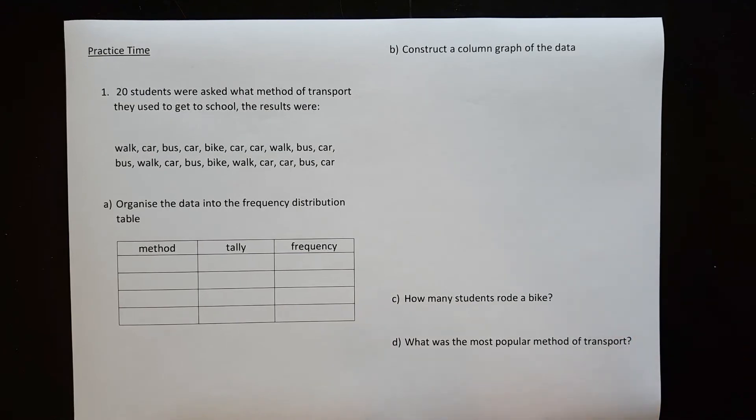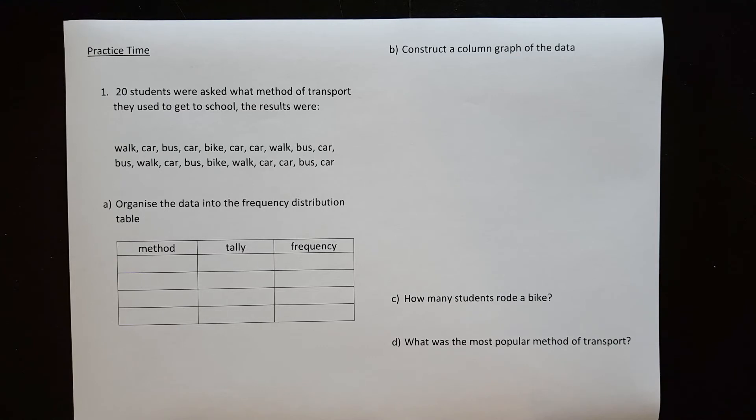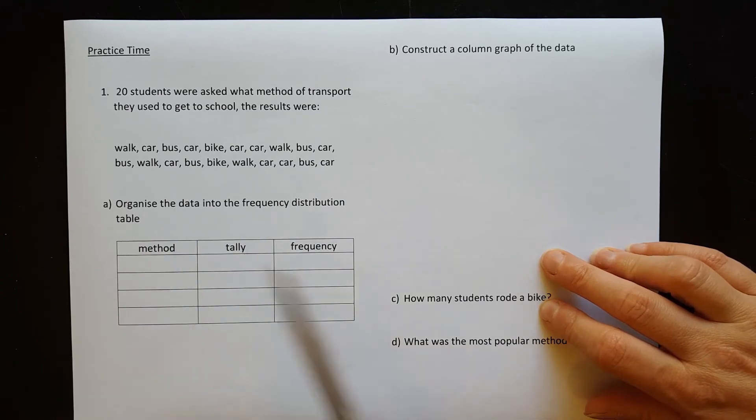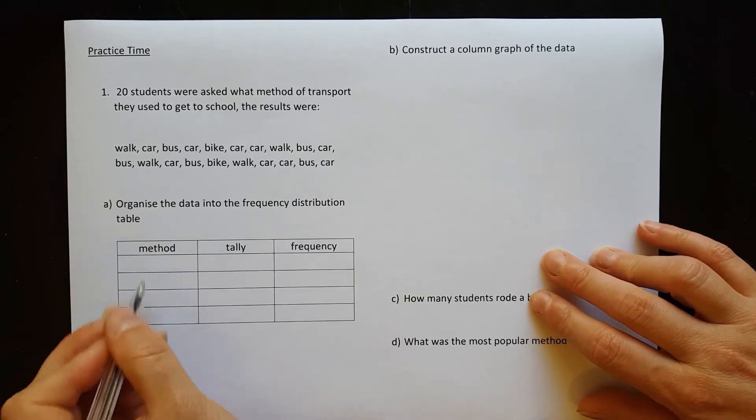So here's another question just like the one I've shown you. You need to fill in the table and then construct your column graph. Pause the video, give this one a go and then restart to see if you get the same results. So 20 students were asked what method of transport they used to get to school. The results were walk, car, bus, car, bike. All the results are in there. Organize this data into a frequency distribution table.